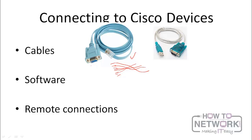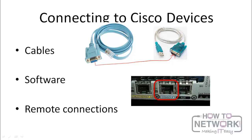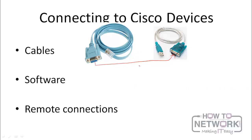Most computers nowadays do not have that serial port. So if you're going to be configuring a device, you might need a converter cable from the DB9 port to the USB port. You connect the console cable to this converter, then connect one end to the console port of the router and the USB port to your computer. The console port of the router is always clearly marked 'console' and is usually at the back of the router or the switch. Once you connect that, you should be able to configure the devices physically.